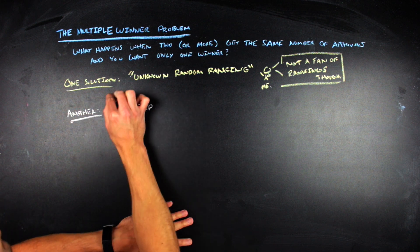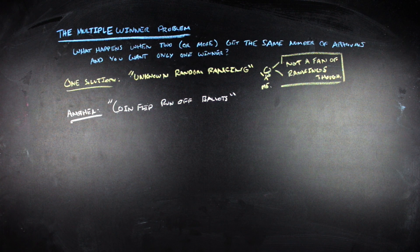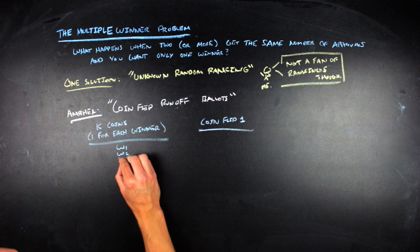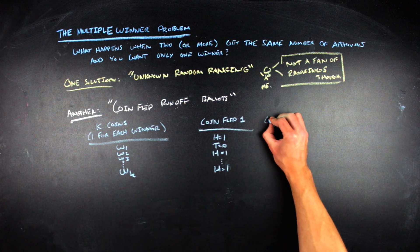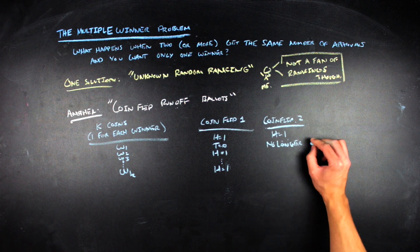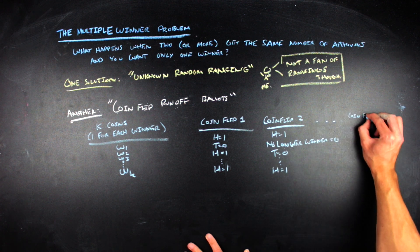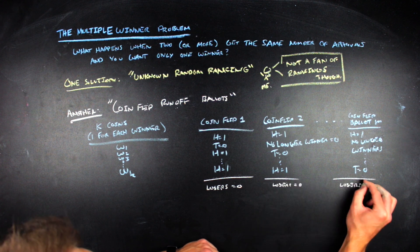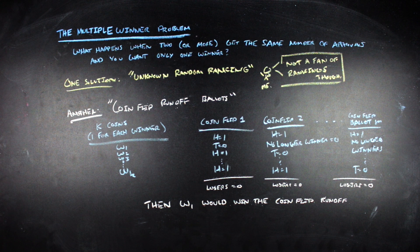Another example of one way you could fix this is with what's called a coin flip runoff election. In a coin flip runoff election, you generate coin flip ballots determined by K coins for the K winners that are present in the election, and everyone else who has already lost just gets a zero. In each stage of the coin flip runoff, you flip all K coins and see which ones are heads — heads counts as an approval for that candidate, tails counts as a disapproval. You keep flipping the coins until there is one person left with the most approvals based on the electorate's ballots and the coin flip runoff ballots.